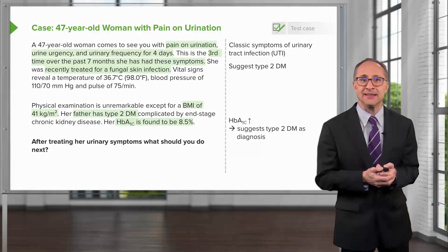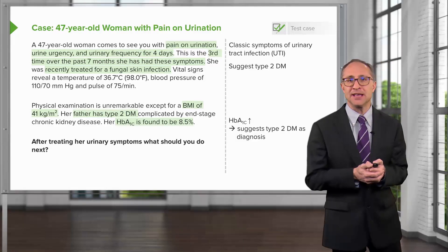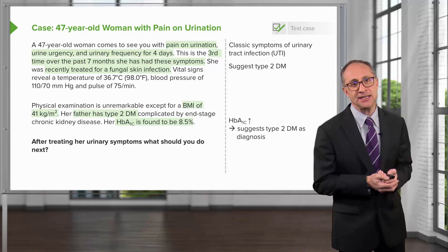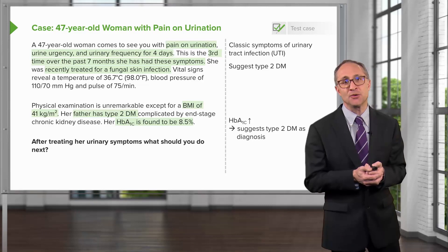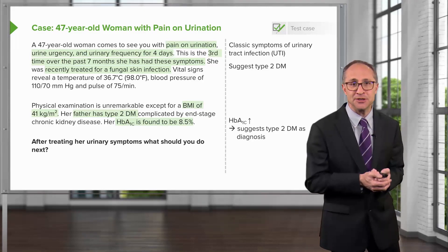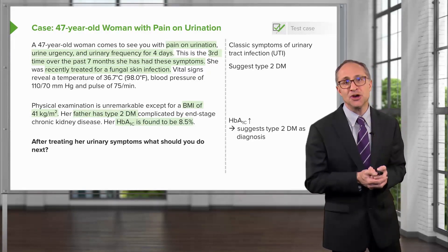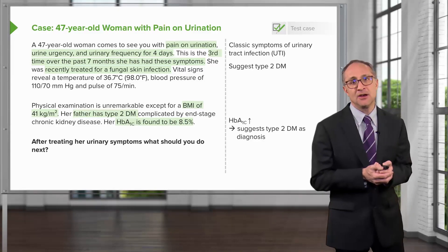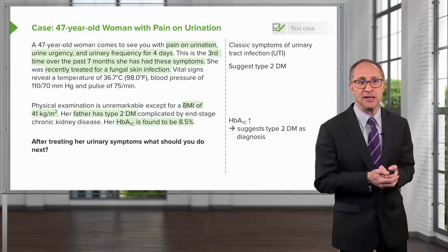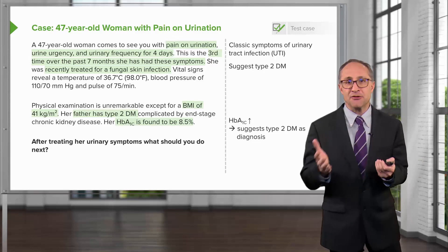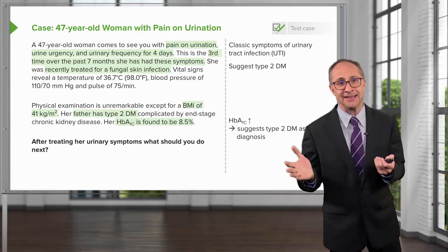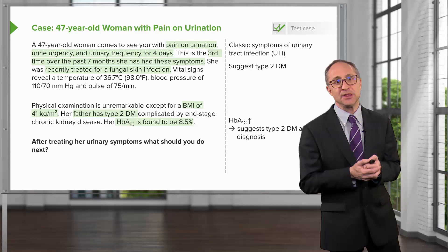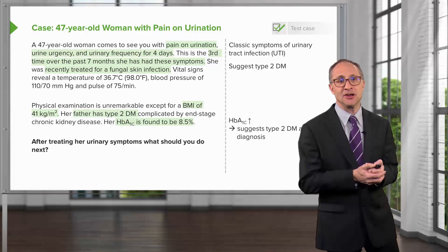Diabetes mellitus is the diagnostic term applied to people satisfying one of any of the diagnostic criteria of elevated random glucose plus symptoms, or a fasting glucose, a positive oral glucose tolerance test, or an elevated hemoglobin A1c. All of these three last tests require confirmation with a repeat test, preferably with the same diagnostic test.